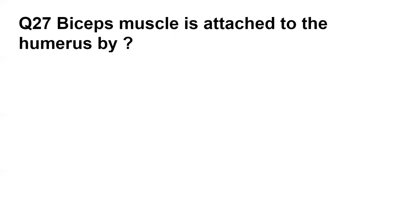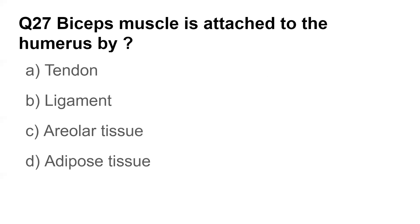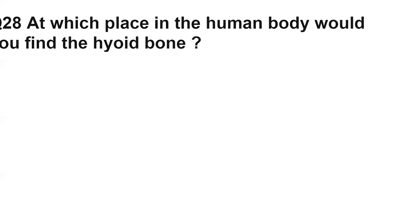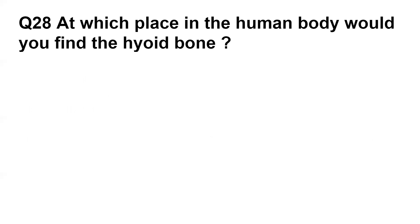Question number twenty-seven: The bicep muscle is attached to the humerus by — options are tendon, ligament, areolar tissues, and adipose tissues. The answer is tendon.